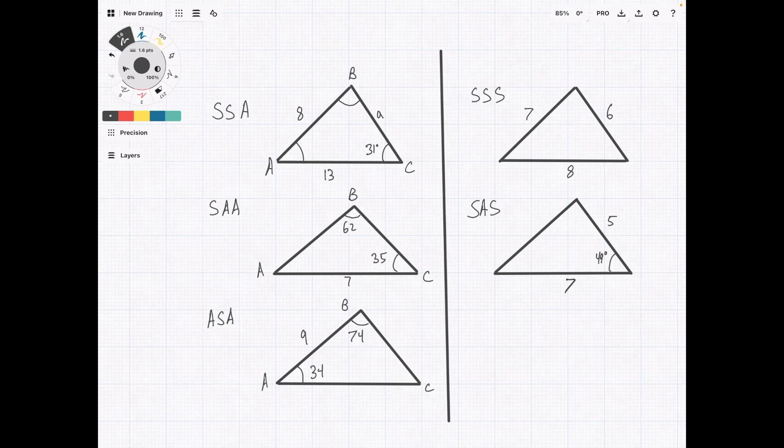The names of the triangle problems like SSA, SAA, ASA all refer to what values you're given. So for example, SSA means you're given a side, a side, and an angle. SAA means you're given a side, an angle, an angle. So S and A's are just sides and angles.